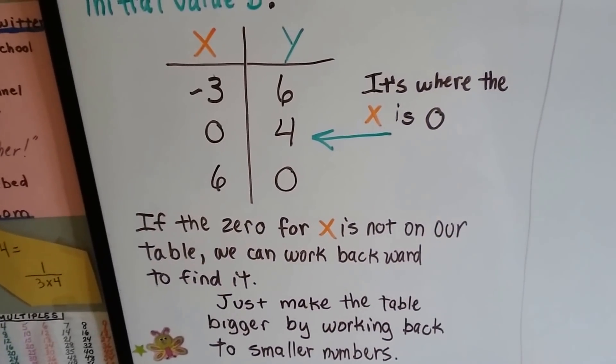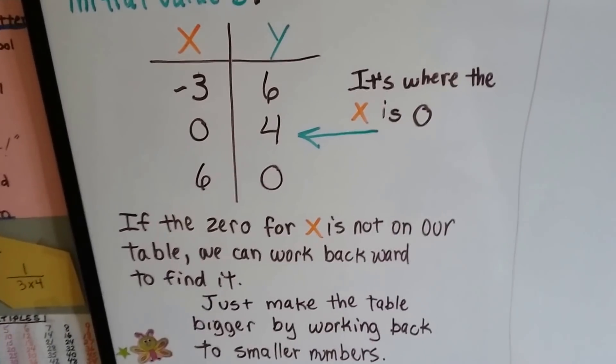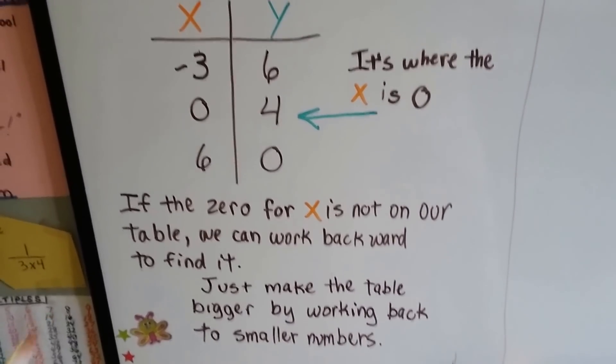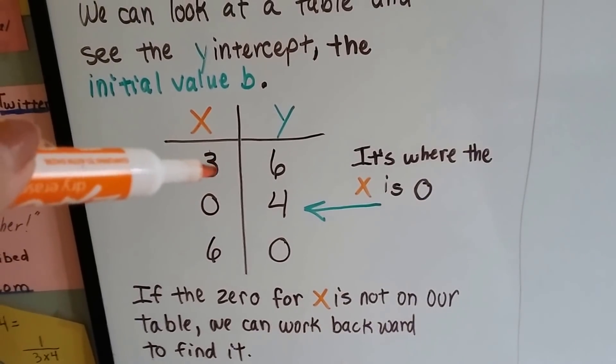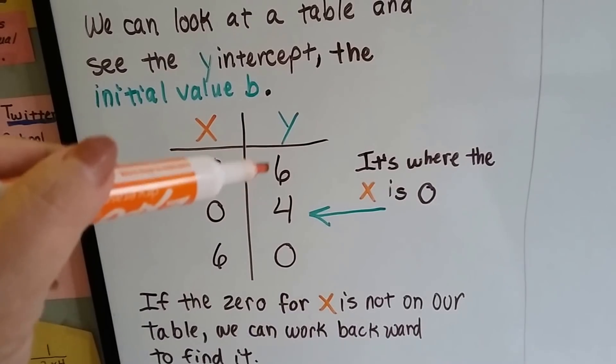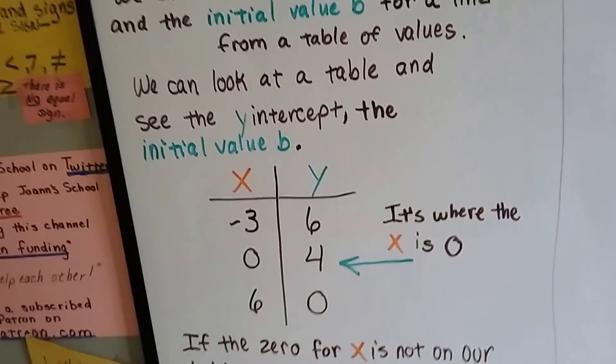And if the 0 for the x is not on our table, we can just work backwards to find it. We just make the table bigger by working back to smaller numbers. We make the next smallest number up here, and the next smallest one up here, and the next smallest one up here, until we do get to a 0 for the x.